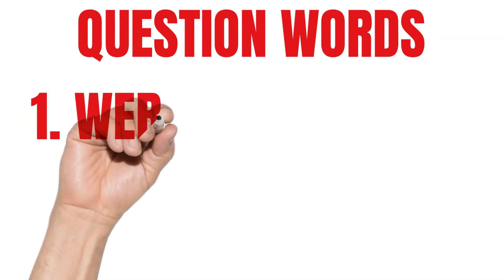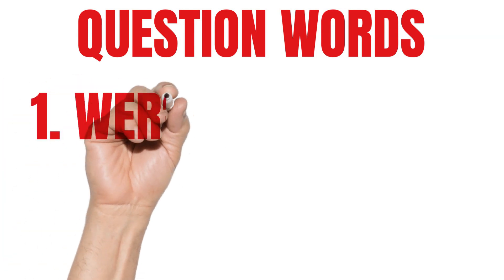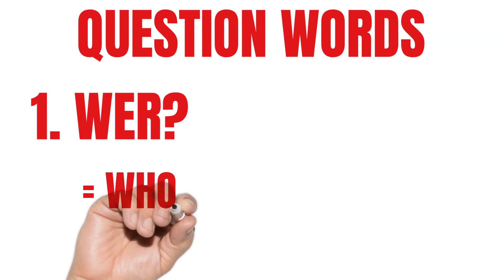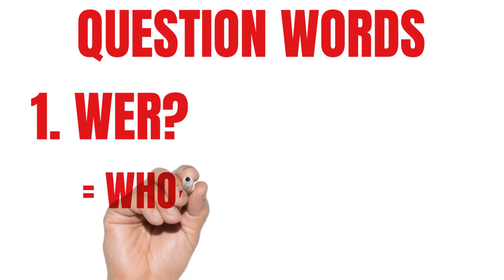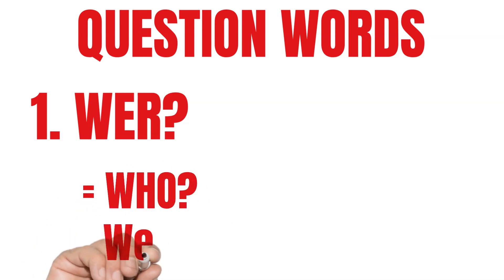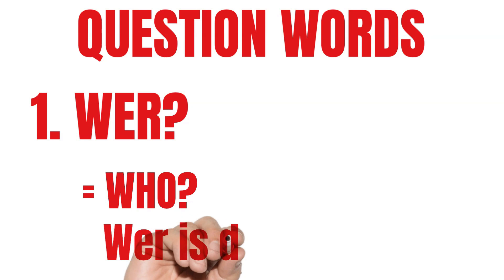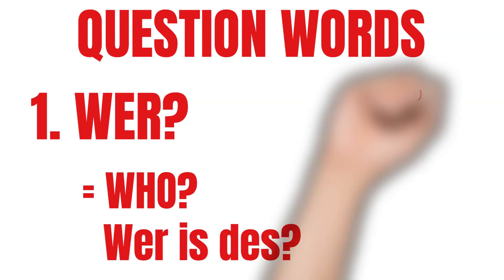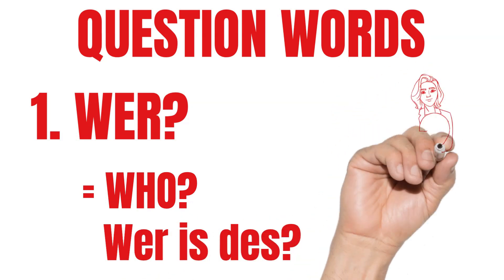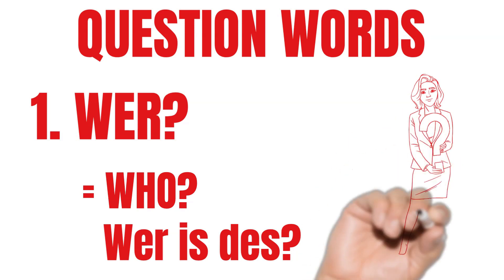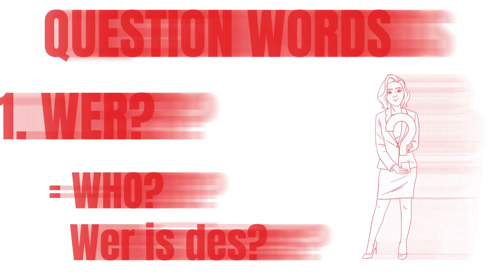Wer. Wer means "who" in English. For example, "Wer ist dies?" — in Austrian German. In standard German: "Wer ist das?" And in English: "Who is that?"